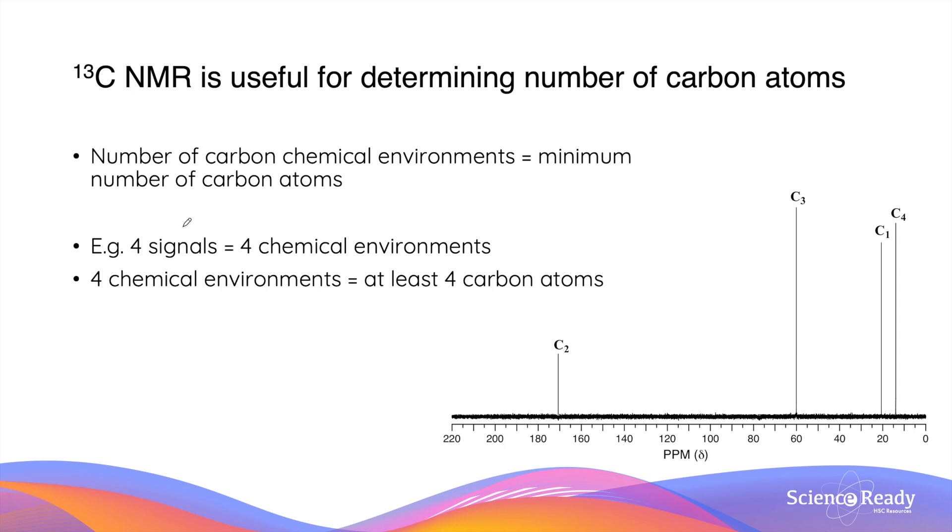For example, in this spectrum we are given four different signals. This tells us this molecule contains four chemical environments for its carbon atoms. Since it has four chemical environments, we know that this organic molecule has at least four carbon atoms as it is impossible to have four chemical environments if there are less than four carbon atoms.